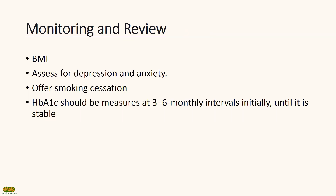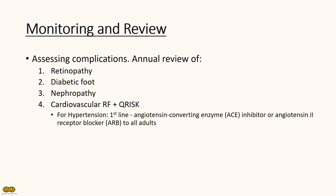Diabetes is a chronic condition and it's important to monitor and review these patients regularly. At each review, assess the patient's BMI, check mental health, check smoking status, and measure HbA1c. Don't forget to assess for complications as well. Macrovascular risk factors can be stratified with Q-risk scoring. For patients with hypertension, the first-line antihypertensives are ACE inhibitors or ARBs, regardless of age or ethnicity. Ensure that patients have regular checks of their eyes and feet, and perform a protein-creatinine ratio to assess for nephropathy.